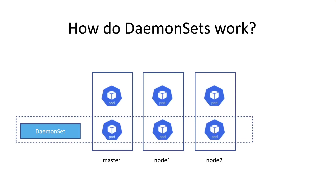Kubernetes is the new thing now, and we are deploying applications as pods in our Kubernetes cluster. A DaemonSet is a resource similar to a deployment, except that when you define a pod under a DaemonSet resource, your pod will be created on each and every node of your cluster. For example, if you deploy a FluentD image under a DaemonSet, your FluentD pod will be created on all of your nodes — FluentD is software that does log collection.